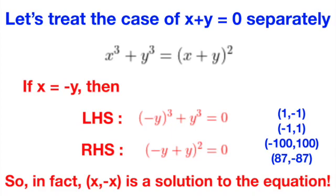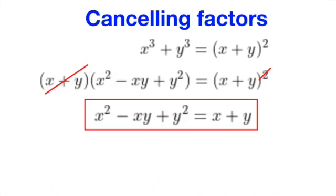Having found an entire family of solutions, we can move on and assume that x plus y doesn't equal 0 and proceed to cancel the factor from both sides of the equation. Doing so, we get x squared minus xy plus y squared equals x plus y.